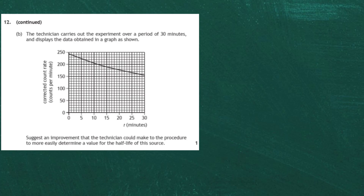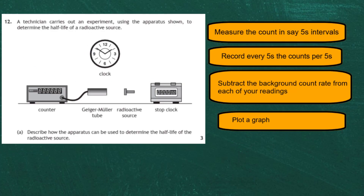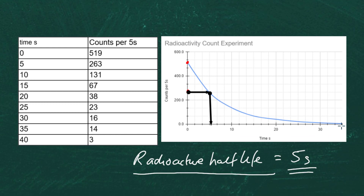Question 12 part b: the technician carries out the experiment over a period of 30 minutes and displays the data in a graph. For one mark, suggest an important improvement to more easily determine the half-life. Looking at the technician's graph, we begin with a reading of about 250. Half of 250 is 125, but we cannot read that off the graph because there isn't enough data, whereas with our data we have quite a lot and can easily find the half-life.